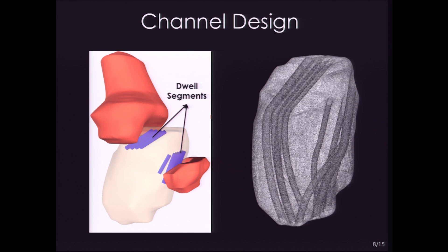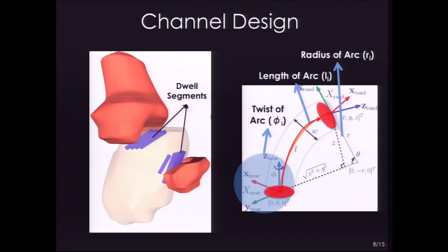A dose planning algorithm gives us these dwell positions, and channels come in because they connect these dwell positions to the entry zones. The channels are curvature constrained due to limitations on the radioactive source. Each channel is created as a sequence of arcs using traditional robot motion planning algorithms.